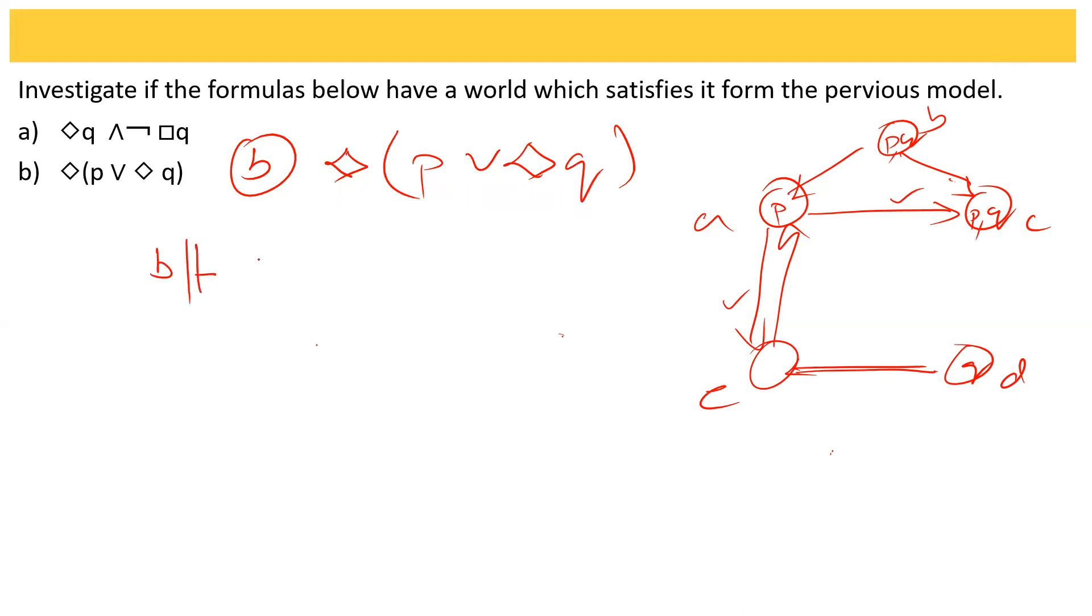My claim is that B satisfies this. That is there exists a path such that P or box Q or diamond Q is satisfied. That is the path A.